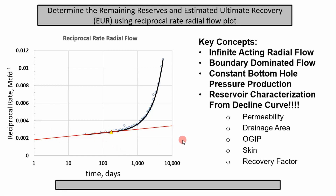In petroleum engineering textbooks, you can simulate a well assuming constant bottom hole pressure or constant rate. Because we're using decline curve data, constant bottom hole pressure is a good approximation for the infinite acting region. When you start producing a well, you choke back production — there's a bottleneck because downstream facilities like gas plants and separators require a certain pressure. The pressure during infinite acting time remains relatively constant throughout.